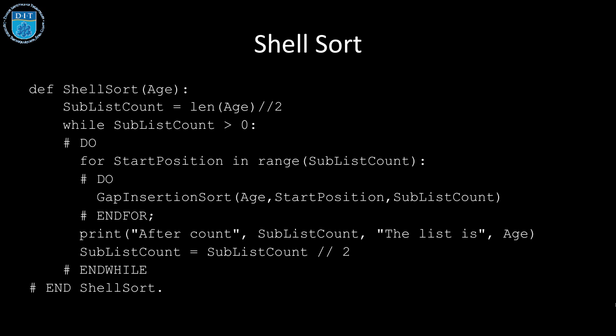Our shell sort, which is our main method or module but not the only one, says figure out the length of the array and divide it by two, then keep looping around and keep subdividing the list until we have just one element in the list. Then we have a for loop which starts counting all the values in the sublist.